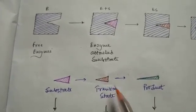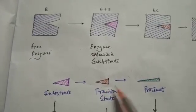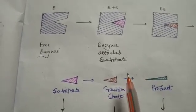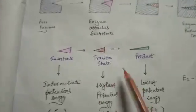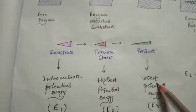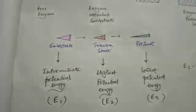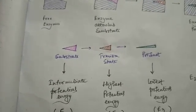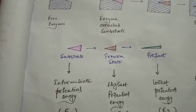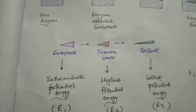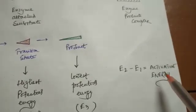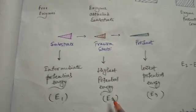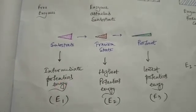It has been found that there can be more than one transition state. There is a very important thermodynamic link between the substrate, the transition state, and the product: the transition state will have the highest potential energy, the product will have the lowest potential energy, and the substrate will have an intermediate kind of potential energy. To do a particular reaction, the substrate must gain energy equal to that of the transition state.